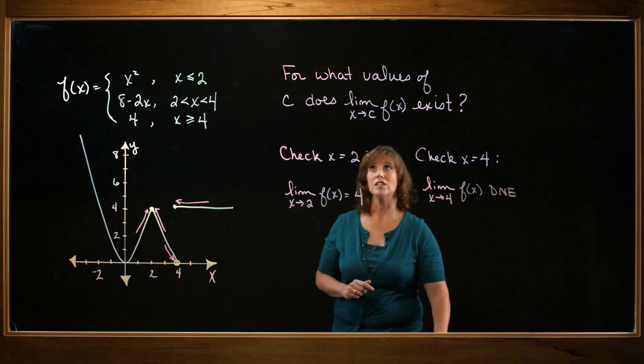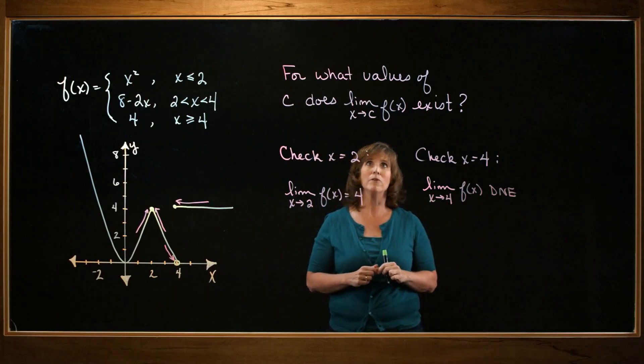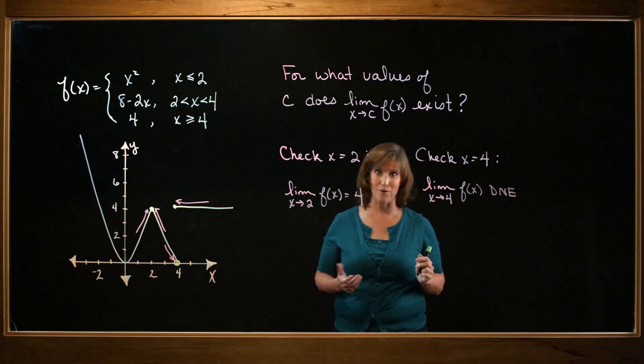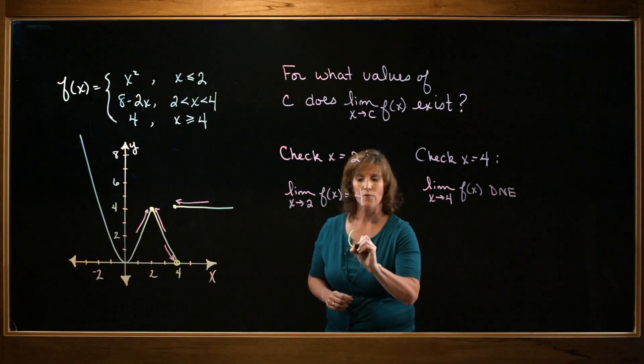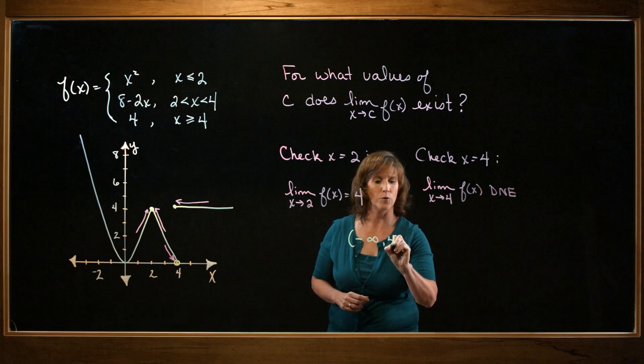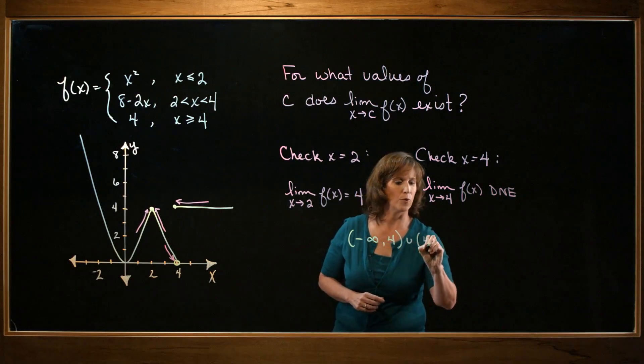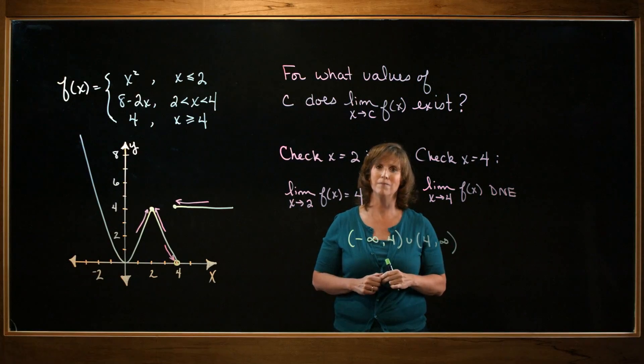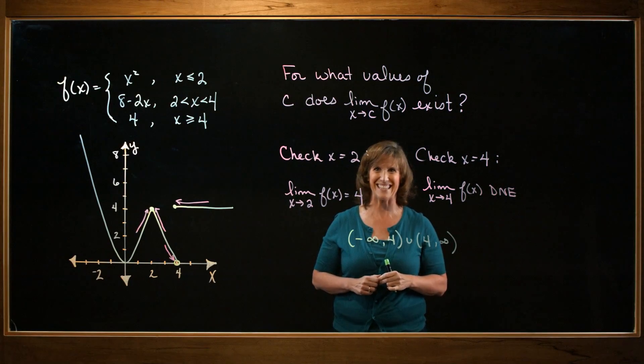So to answer my question, the only spot that I'm having trouble evaluating my limit or where it doesn't exist is at 4. So where does it exist? Everyplace else. So from negative infinity to 4, and then from 4 to infinity. Notice the round brackets, so I'm not including 4 in this interval. I hope this was helpful. Thanks.